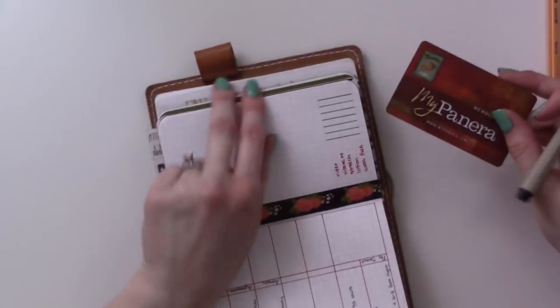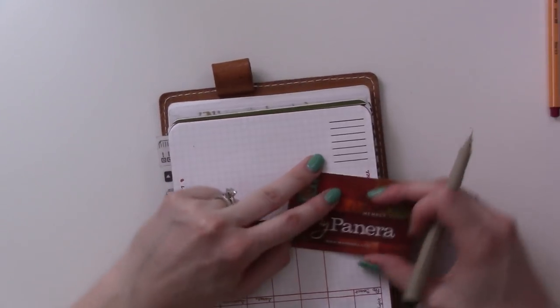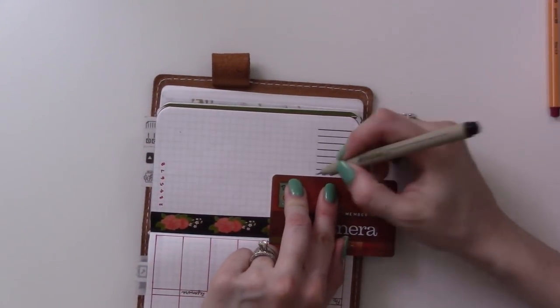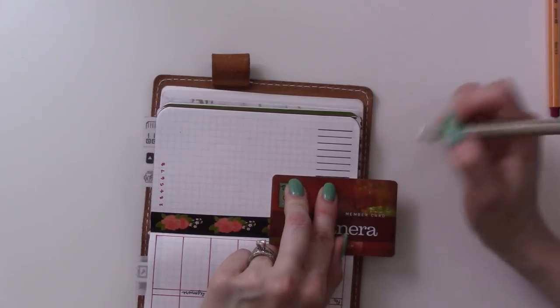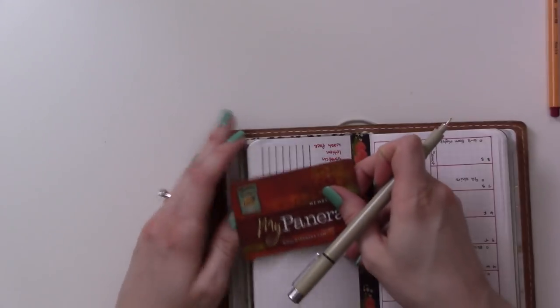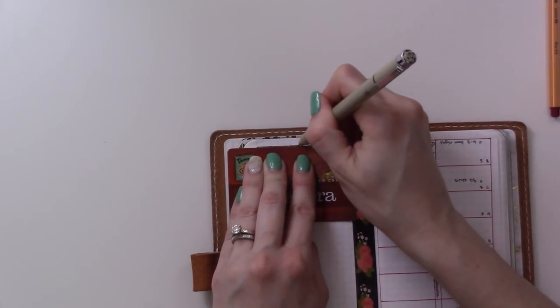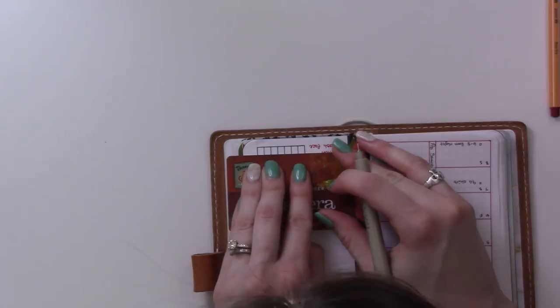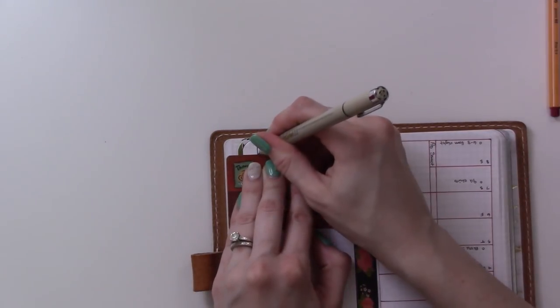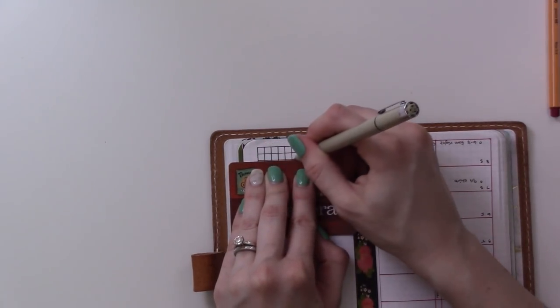But mostly I don't really need to carry stuff around because my bujo lives in my purse, and anything that I need with me I just keep in my purse. I like that the cover is not uneven because it doesn't have the extra layers of leather where the pockets go. It's hard to make the first line because there's nothing visible as a guide line.